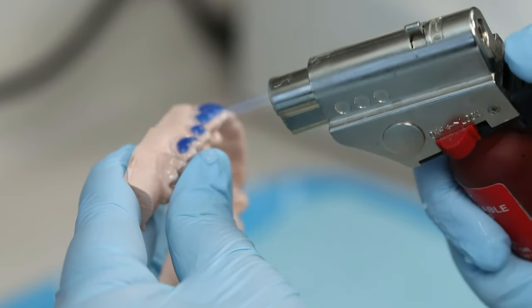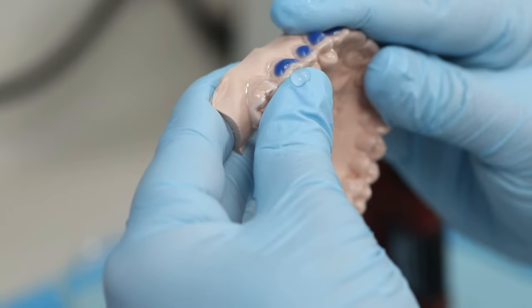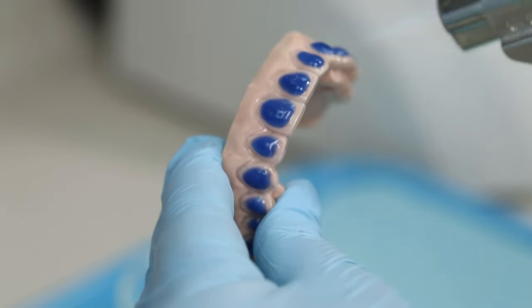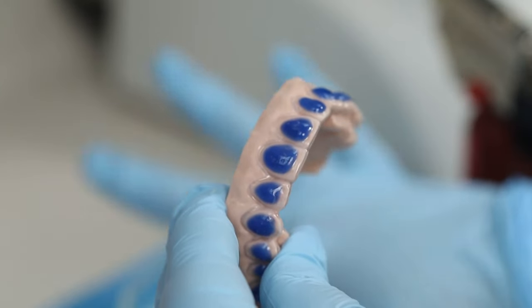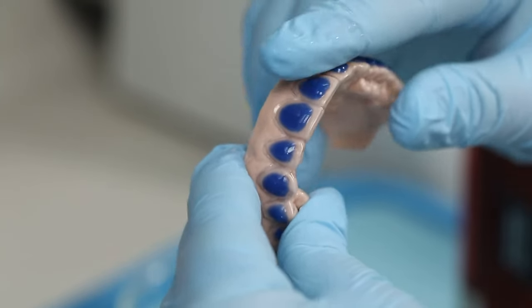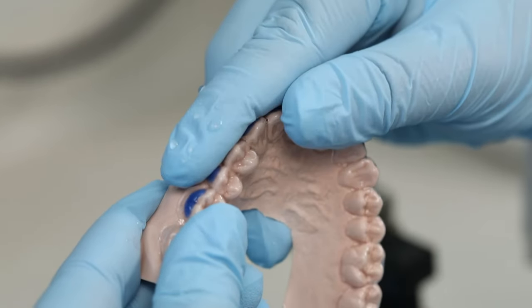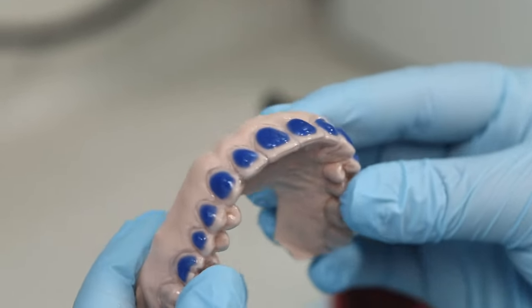Gently flame polish edges one quadrant at a time if necessary with a butane torch. While still warm, immediately hold periphery of each segment firmly against model for 3 seconds with water-moistened gloved finger. If this overthins the tray material, fabricate a new tray.